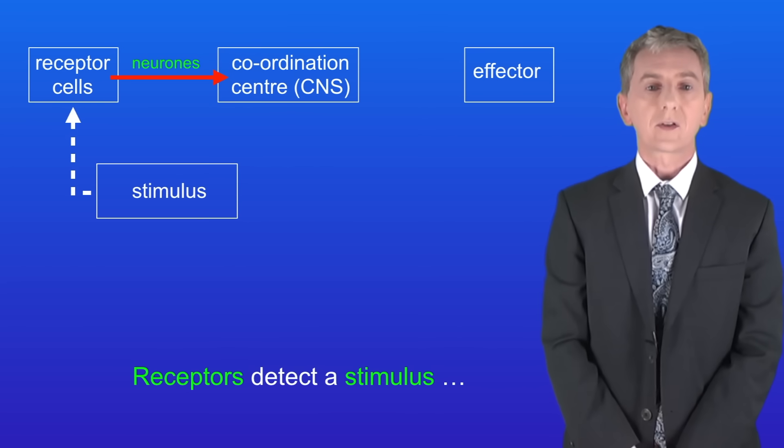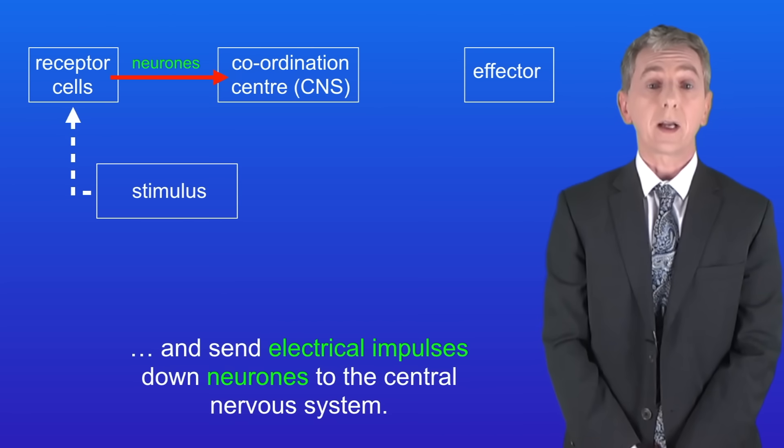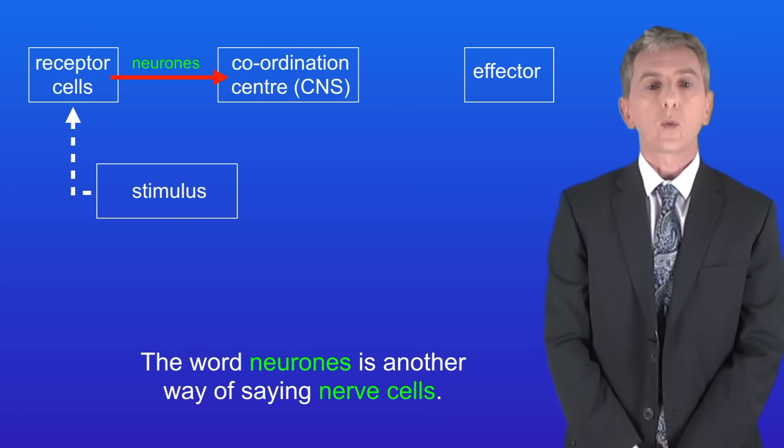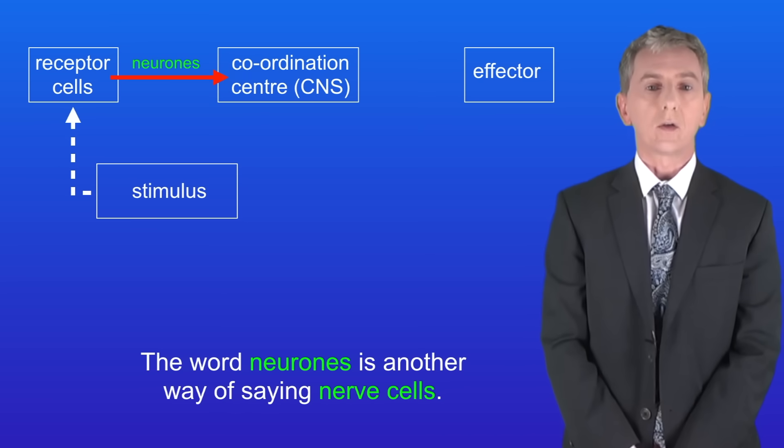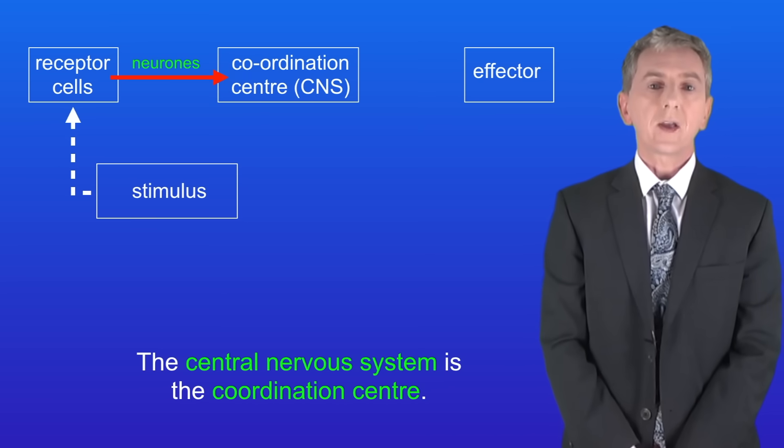So going back to our previous diagram, receptors detect a stimulus and send electrical impulses down neurons to the central nervous system. And the word neurons is another way of saying nerve cells. The central nervous system is the coordination centre.